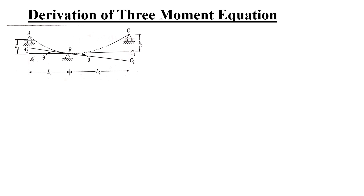L1 is the span of beam AB and L2 is the span of beam BC. Similarly, I1 is the moment of inertia of span AB and I2 is the moment of inertia of span BC. If the middle support B settles down, HA will be the relative position of support A with respect to support B after unequal settlement. Similarly, HC will be the relative position of support C with respect to support B after unequal settlement.